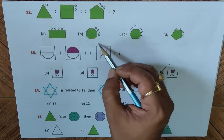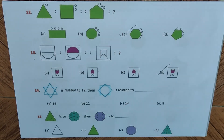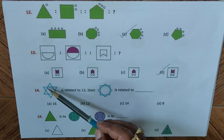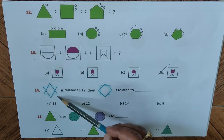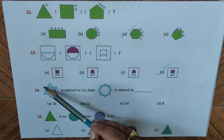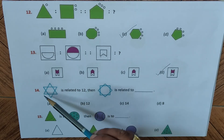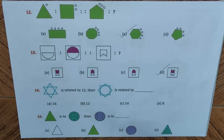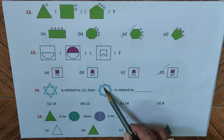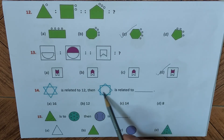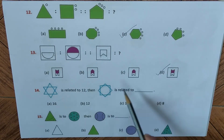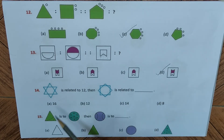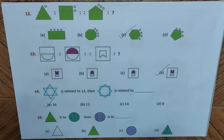Question fourteen: we have two triangles — one up, one down — with six sides total since each triangle has three sides, so three plus three equals six. Six relates to twelve because six plus six is twelve. Similarly, a square has four sides, another square has four sides — four plus four is eight, and eight plus eight is sixteen. So sixteen is the right answer.